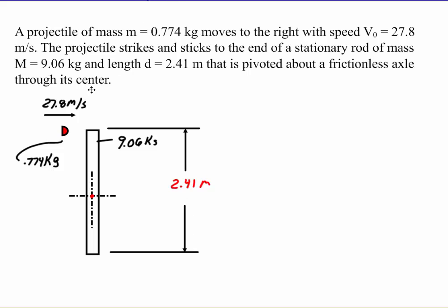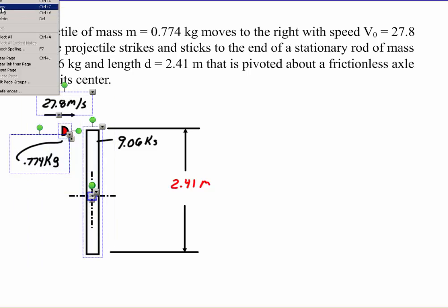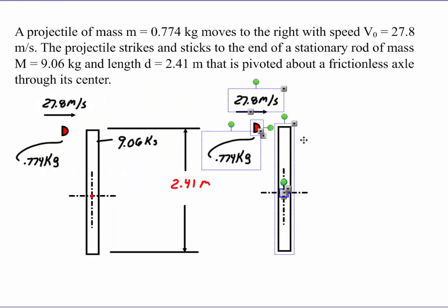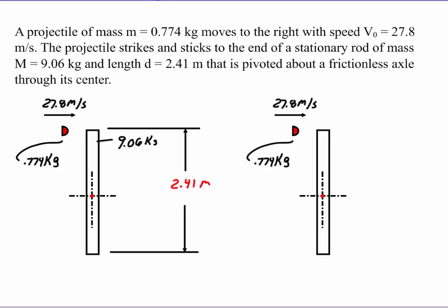After it sticks, I'm going to grab some of this and bring it over on the other side. This piece is going to stick right on the end, like this. So right at impact, it's going to still have that velocity. And what we want to find is right when it impacts, what is this new angular velocity going to be, omega.